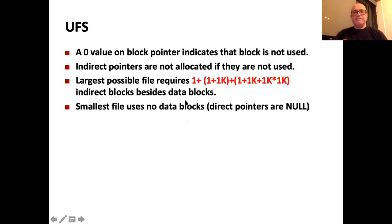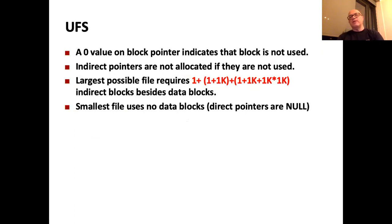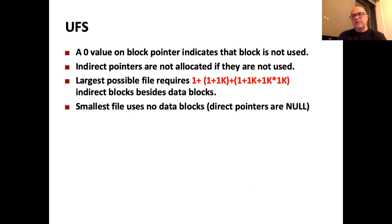Block pointers may contain zero, meaning that block is not allocated. If indirect pointers are not used, they are not allocated. If a block hasn't been written yet, no data is allocated for it. This supports sparse files—you can seek to an arbitrary position and write only that block, leaving all the intermediate blocks as zeros (not allocated on disk), which is a lazy allocation mechanism.